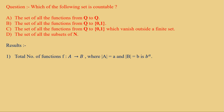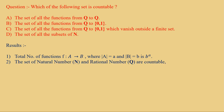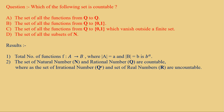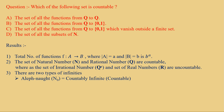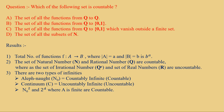Before solving the question, let's go through some results. First, the total number of functions F from A to B, where cardinality of A is 'a' and cardinality of B is 'b', is b raised to a. Second, the set of natural numbers and rational numbers are countable, whereas the set of irrational numbers and real numbers are uncountable. Third, there are two types of infinities: aleph-naught (ℵ₀), which equals countably infinite, and continuum C, which equals uncountably infinite. Also, ℵ₀ squared and 2 raised to a where 'a' is infinite are uncountable sets.